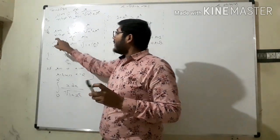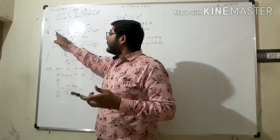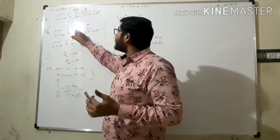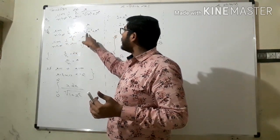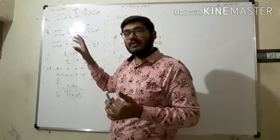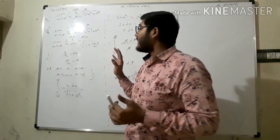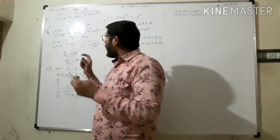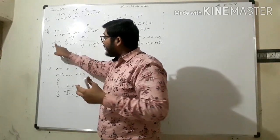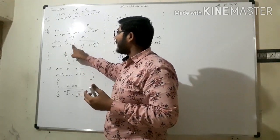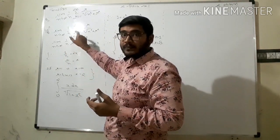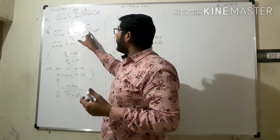So, what is given: limit n tends to infinity, one upon n, summation going from r equal to one to two n, of r upon under root of n squared plus r squared. Now, what we have to do is take limit n tends to infinity of one upon n, summation r equal to one to two n.